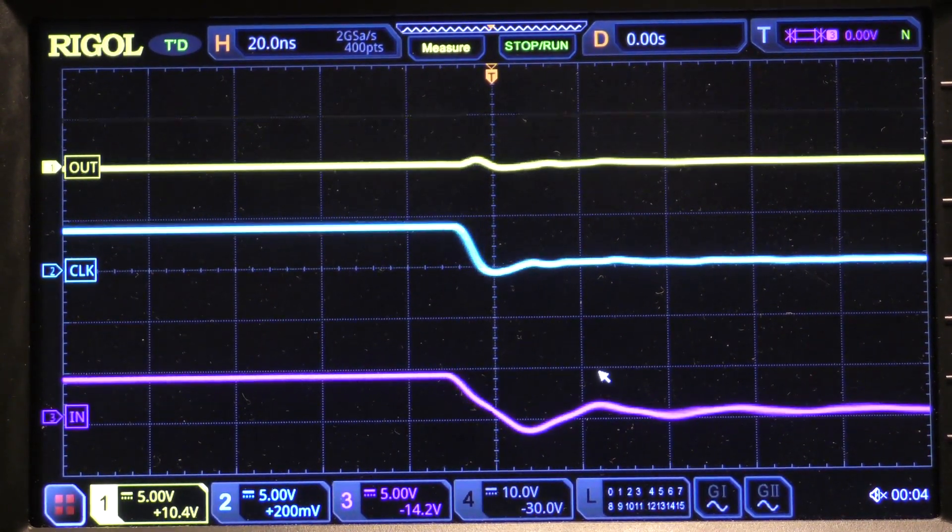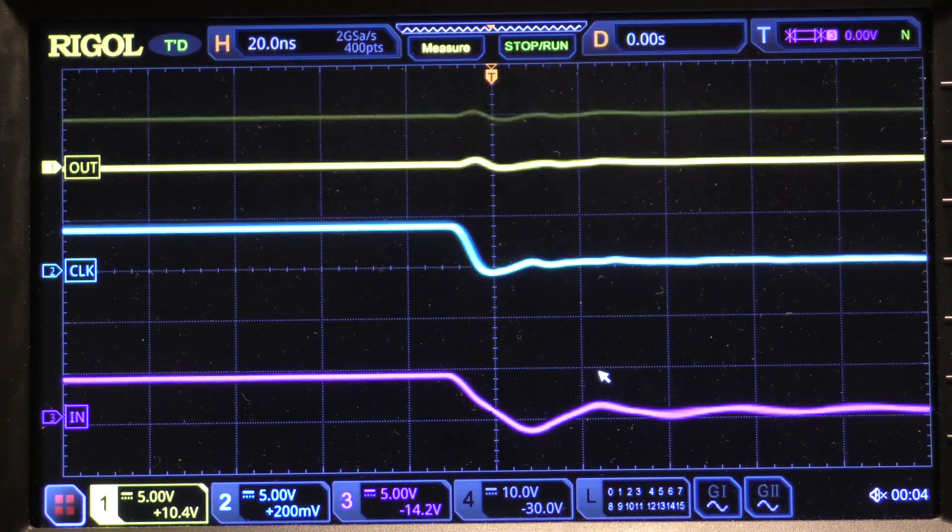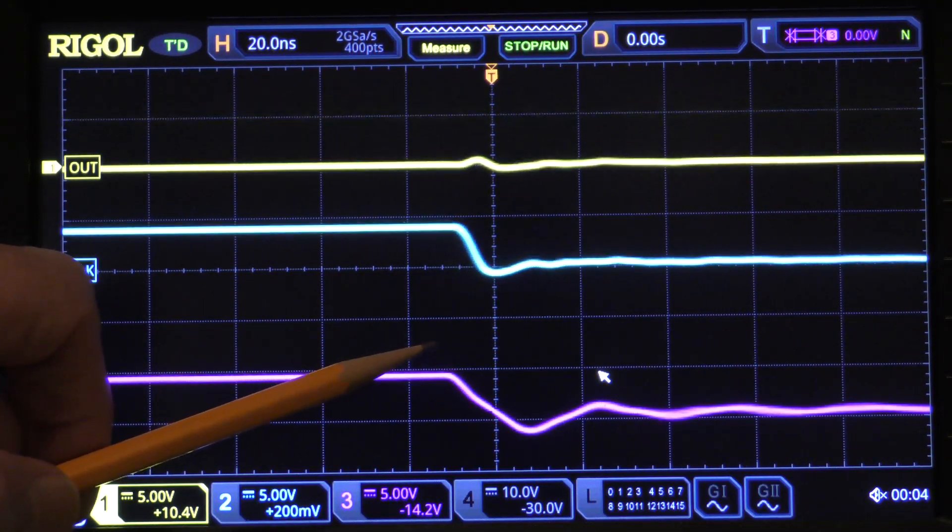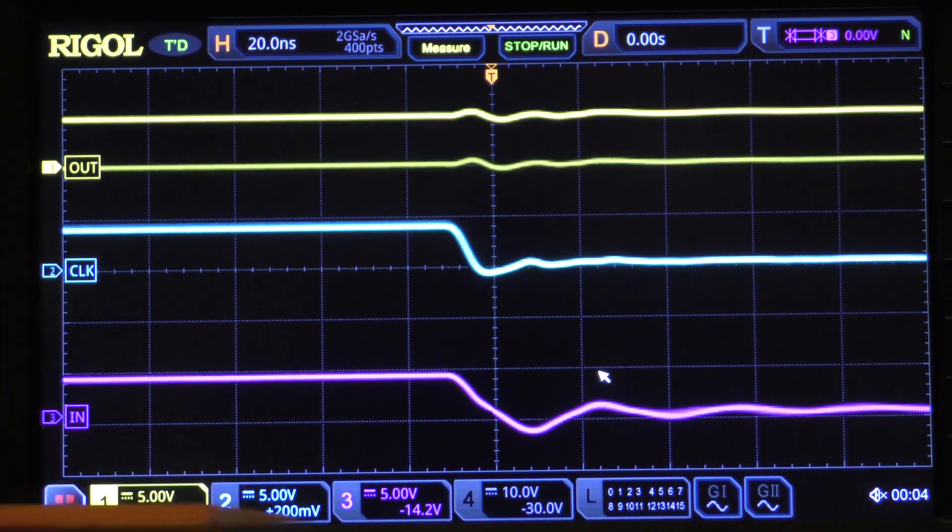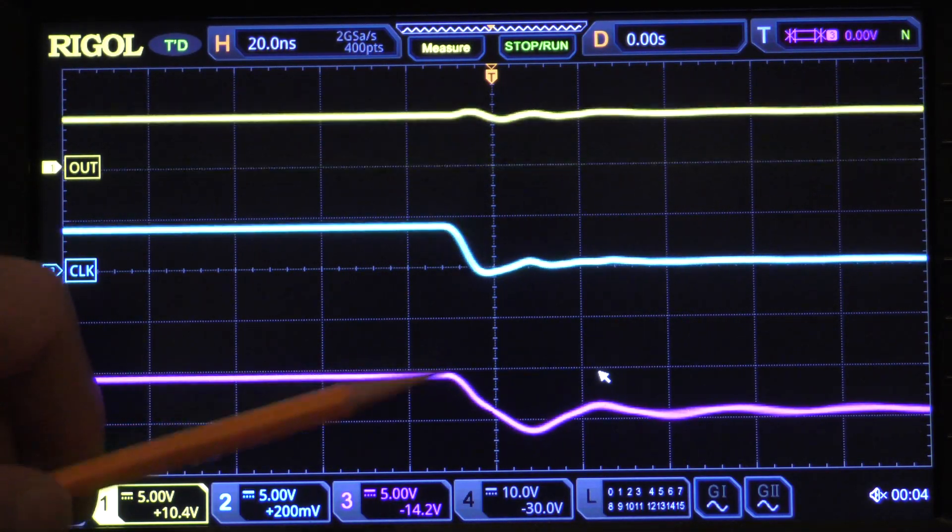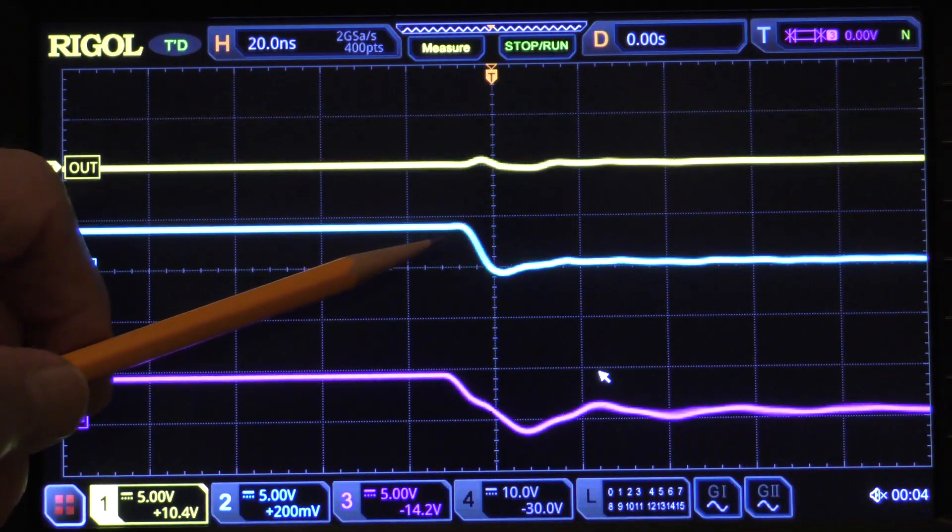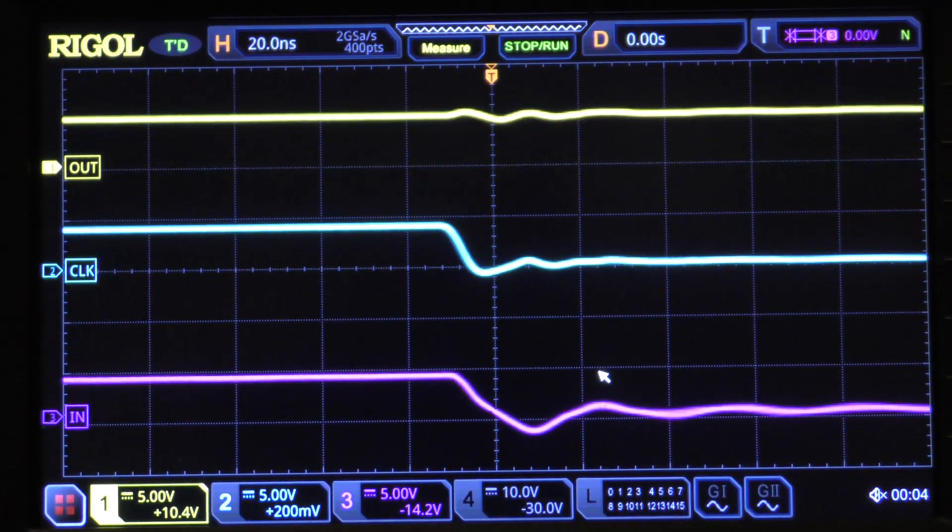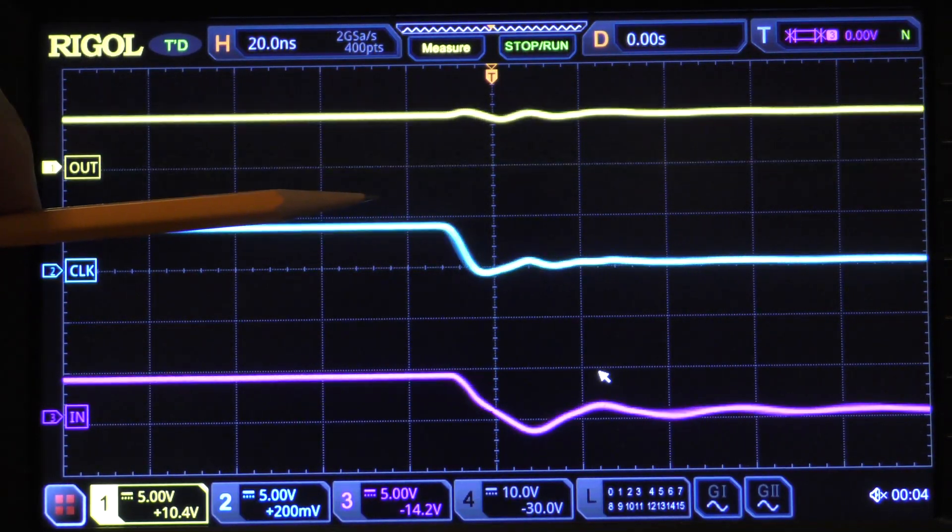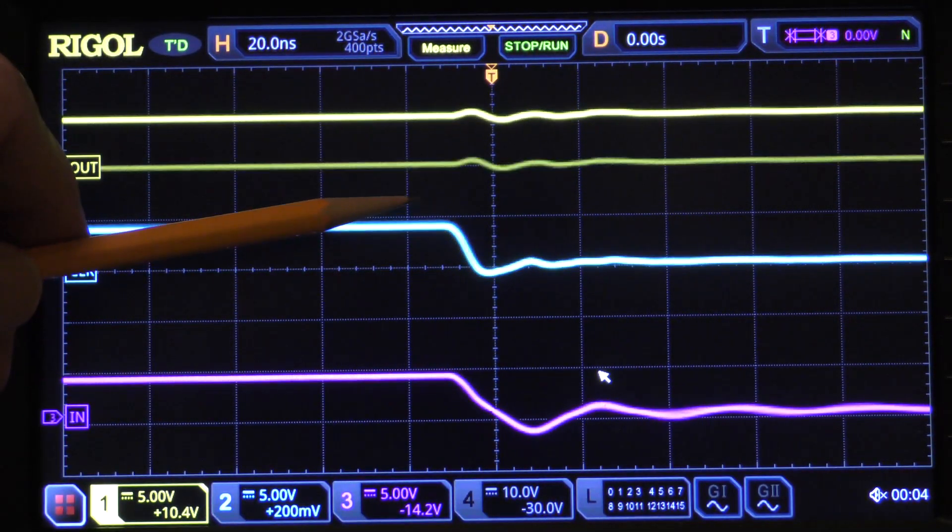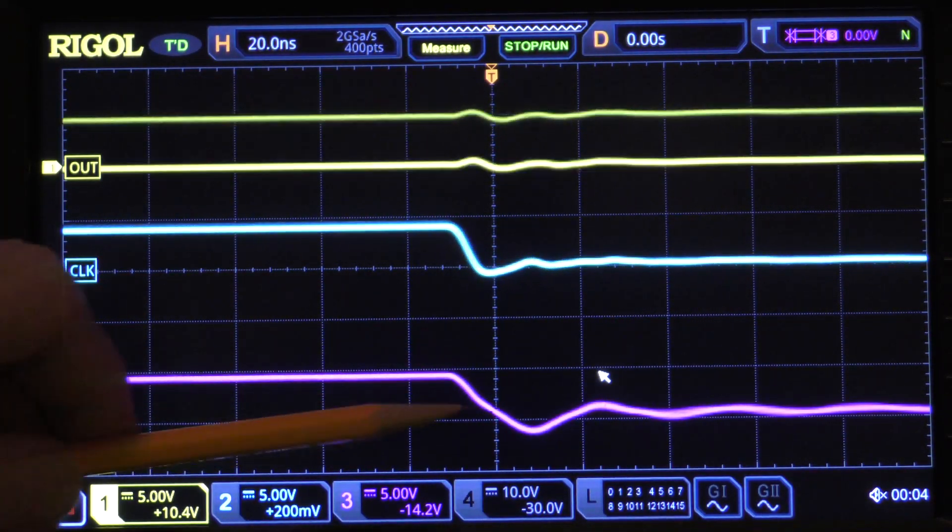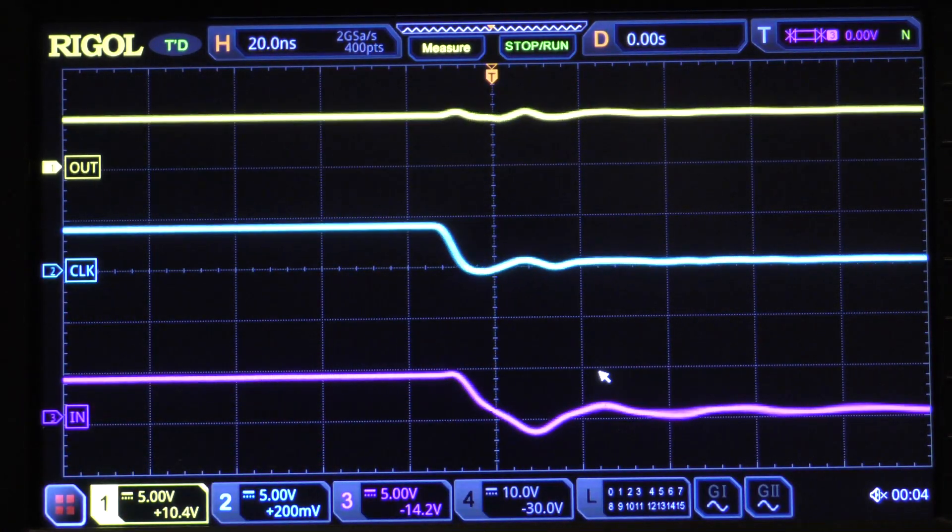Now some of you also might be noticing that this input signal, the data in, seems to have a much higher fall time than the clock. Now if we're using the same technology for both, for example suppose this is high-speed CMOS, then the fall time for the clock driver should be about the same as the fall time for the data driver. But for some reason, in this case, there isn't.